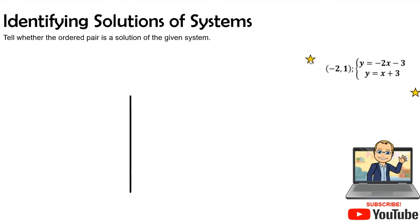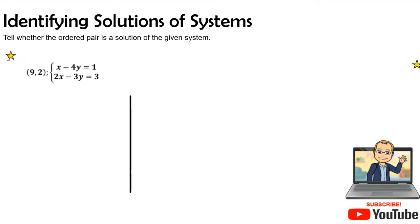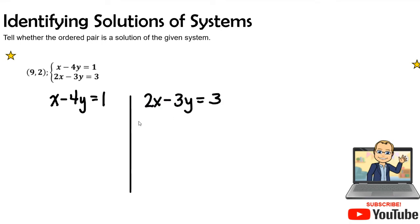Let's try another one. We have the ordered pair 9, 2, and we want to see if it is the point of intersection for two equations: x minus 4y equals 1, and 2x minus 3y equals 3. Our x value is 9 and our y value is 2, so let's replace the variables with parentheses and plug 9 and 2 into our equations.